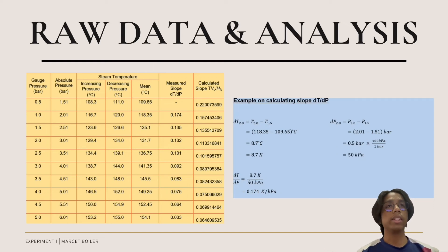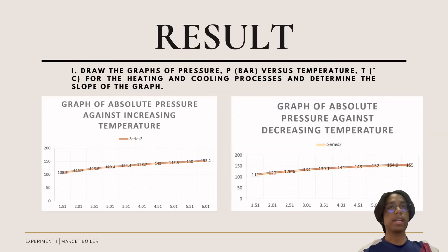On the bottom, we can see the dT over dP value. We just divide the value of dT that we calculated earlier by the value of dP, which is 50 kPa. Hence we got 0.174 K per kPa. Moving on to the next slide: draw the graph of pressure P in bar versus temperature T in Celsius for the heating and cooling process and determine the slope of the graph. As you can see on the left side is the graph of absolute pressure against increasing temperature. All the values are given in the data. At 108.3 Celsius and 1.51 bar is the starting point, and it ended at 153.2 at 6.01 bar.